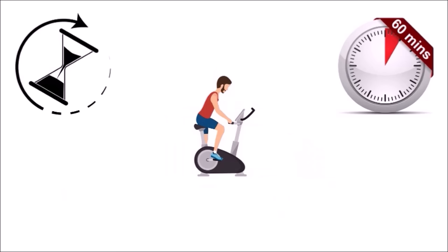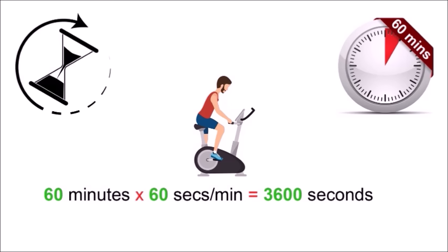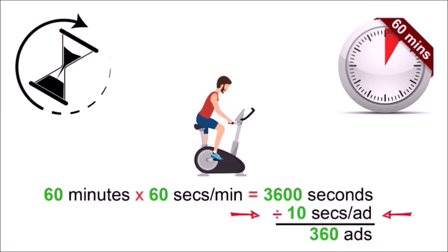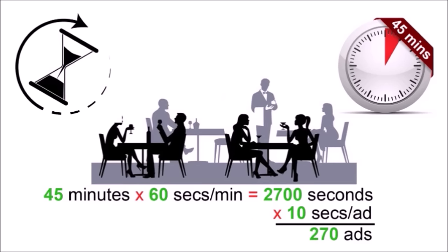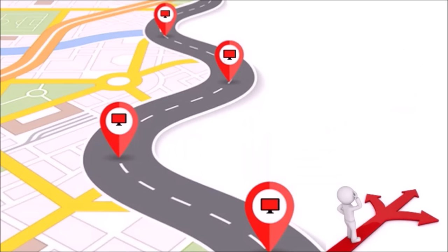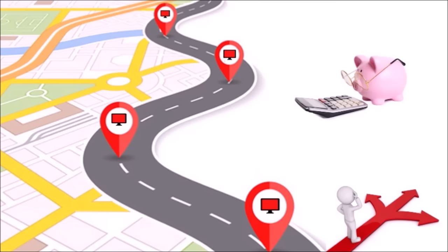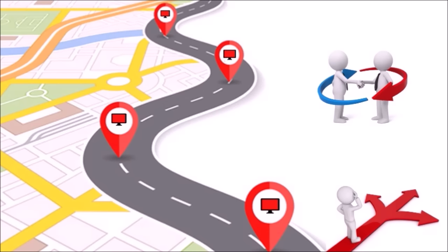Whereas in a gym, the average person spends about 60 minutes. So 60 minutes times 60 seconds per minute equals 3,600 seconds, to which you can fit 360 ten-second ads in a gym if you play each ad once. As per a restaurant, the average dwell time is 45 minutes. There are many different ways to set up an ad network, calculate ad spot prices, and approach local business owners so as to install an ad screen.